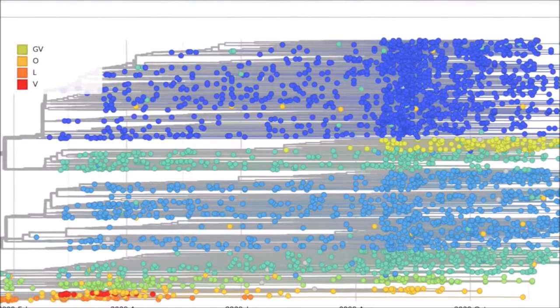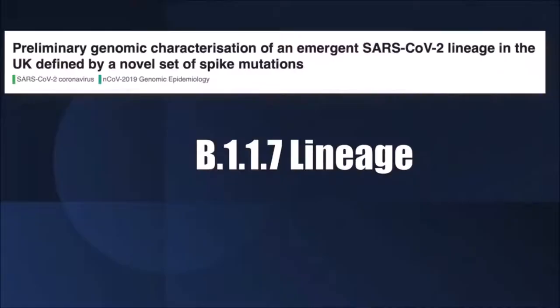RNA viruses mutate a lot. That's their trademark. Scientists have been sequencing the genes of the coronavirus throughout 2020, looking for changes in the genetic code and creating a type of family tree. The mutation in England has been called the B.1.1.7 lineage.